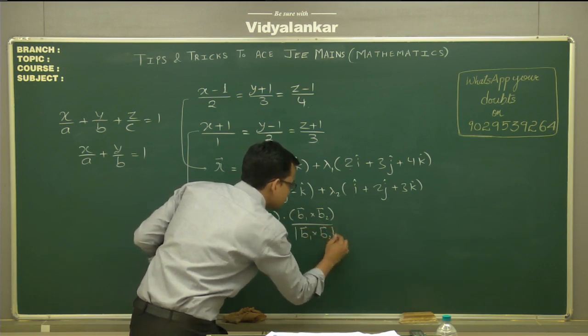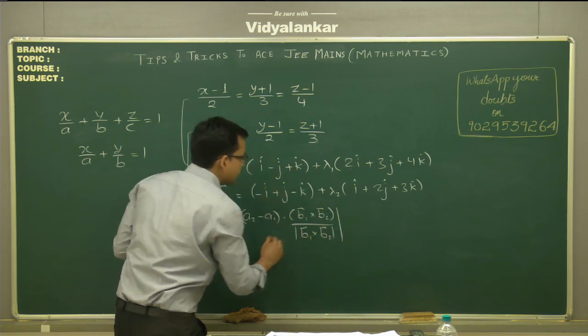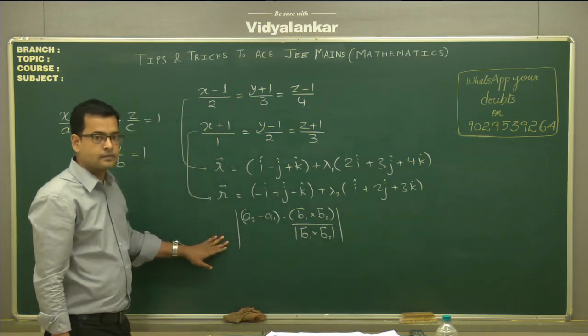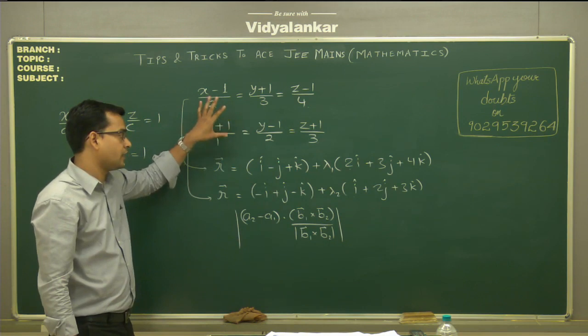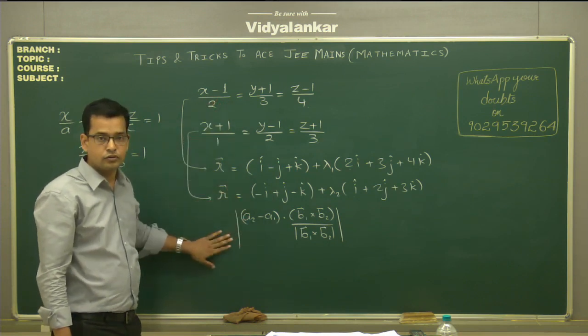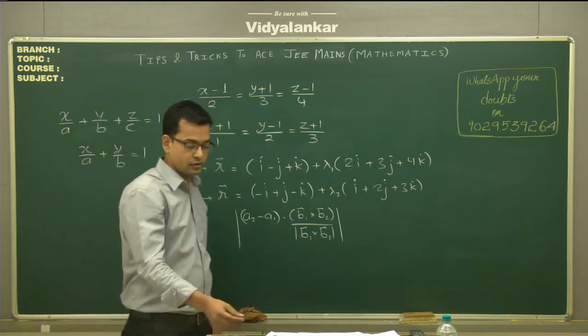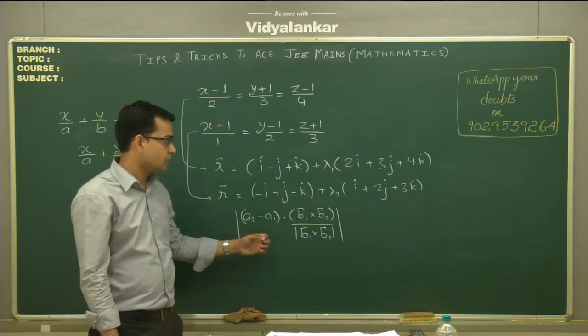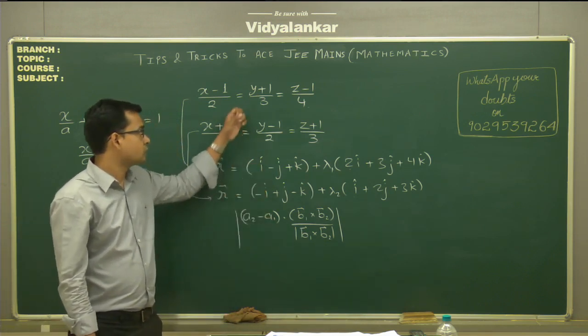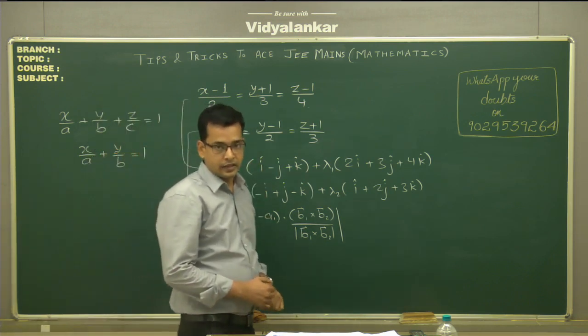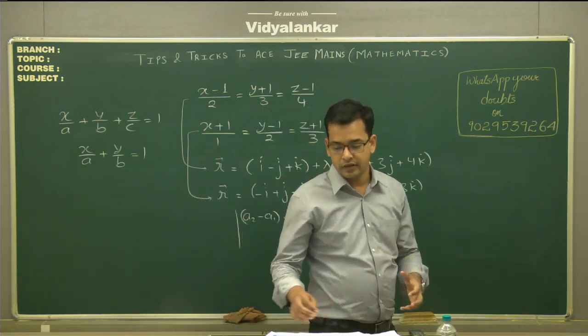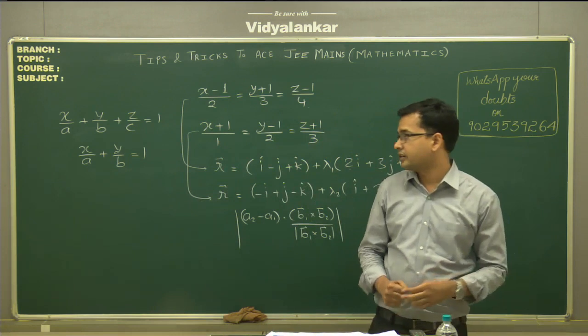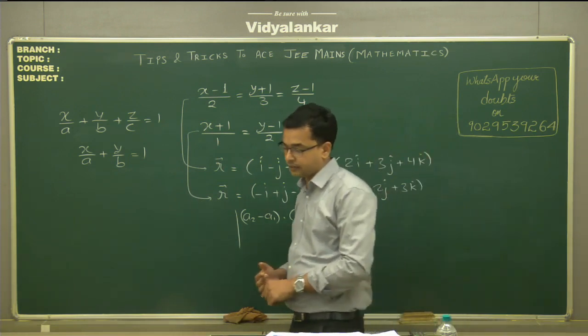Now that is much simpler to calculate in vectors. So this question can only be solved if you know how to convert equation of a line or plane in vectors. This is the distance between two skew lines. In case this comes 0, that means those two lines are intersecting. So just revise the theory, just solve variety of questions in vectors and 3D, and try to find that link between vectors and 3D.